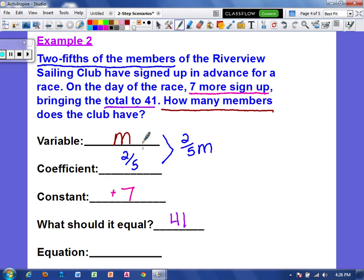So now I'm just going to take all of this and put it together to create an equation. So I have my coefficient and variable two-fifths of M plus the 7 that should equal 41. So two-fifths of the members plus 7 more members should equal a total of 41 members.